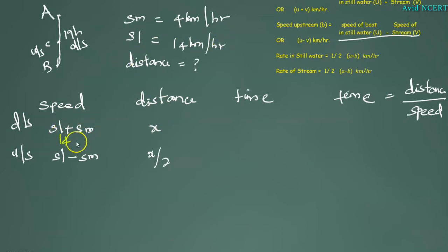SL is 14 plus 4 and here it is 14 minus 4. Now substitute the values, time equals distance by speed, which is X by 14 plus 4 is 18 and here it is X by 2 into 14 minus 4 is 10.